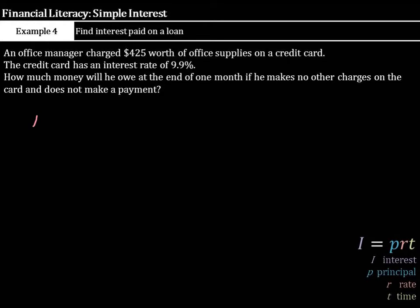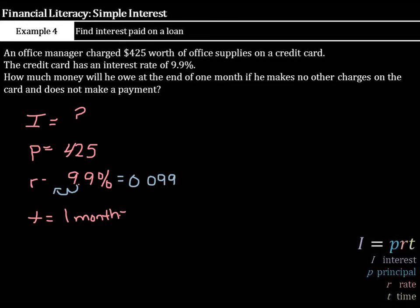Let's set up our variables again. The interest, we still need to look for. We need to find how much interest he's going to be charged. The principal is the amount of money he's borrowing, which is $425. The rate is 9 and 9 tenths percent. And again, move that decimal place over twice to the left, and you get 0.099. Your time is 1 month, which is actually 1 twelfth of a year.